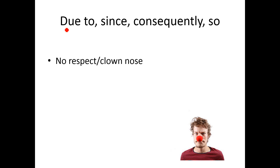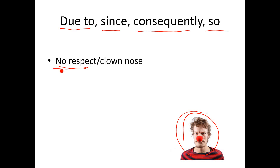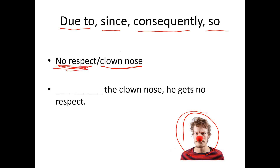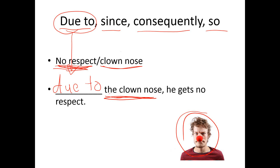I have four more expressions: 'due to,' 'since,' 'consequently,' and 'so.' The situation shows a person — do you give this person much respect? Probably no. Why does this person have no respect? The answer is: he wears a clown nose. So the clown nose is the cause, and no respect is the result. For the blank: '[blank] the clown nose, he gets no respect.' There is no subject-verb combination before the comma, so I need the preposition 'due to': due to the clown nose, he gets no respect.